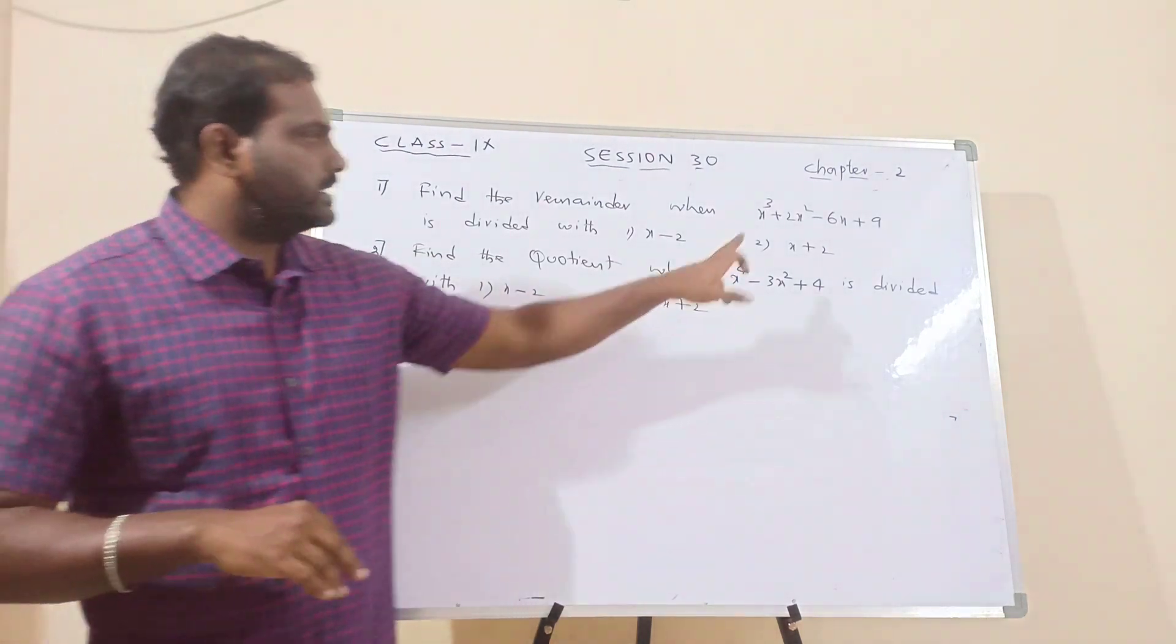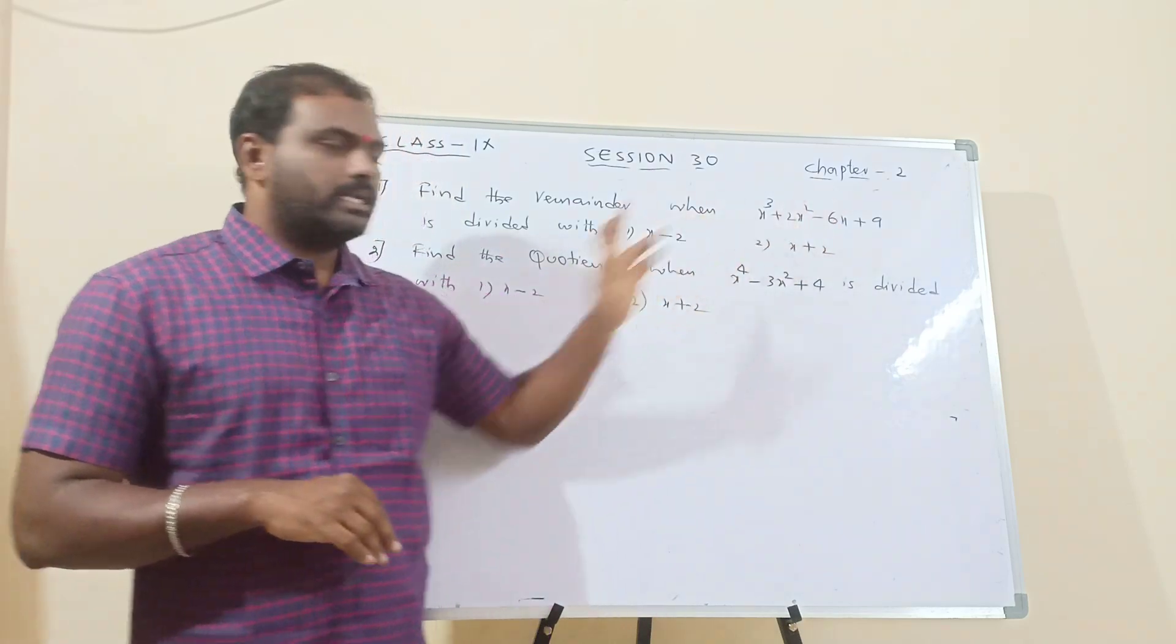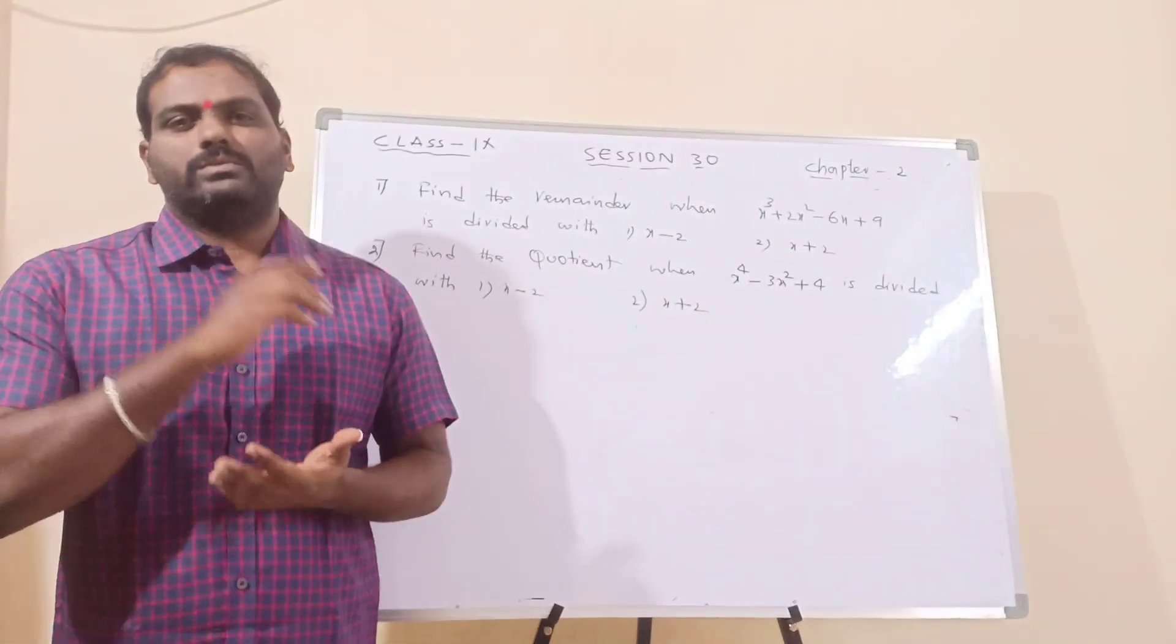So, like this, it will go. Next, same question. x cube plus 2x square minus 6x plus 9, is to be divided with x plus 2. So, that means, what we have to do?